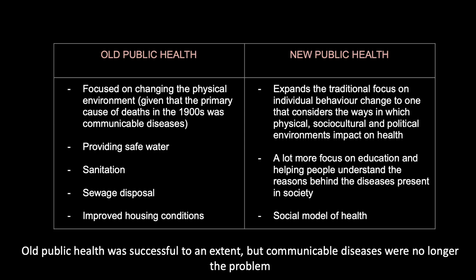Old public health focused on changing the physical environment, given that the primary causes of death in the 1900s were communicable diseases. Old public health also looks at providing safe water, sanitation, sewage disposal, and improved housing conditions. Old public health was successful to an extent; however, communicable diseases were no longer the problem. Diseases such as smallpox were being eradicated, but what challenged society were now lifestyle-related diseases such as obesity and type 2 diabetes.